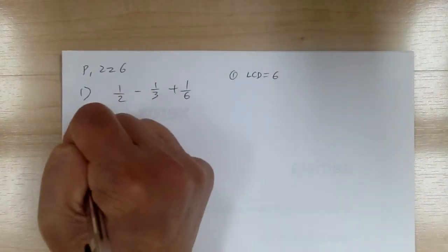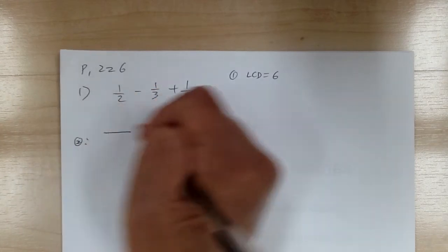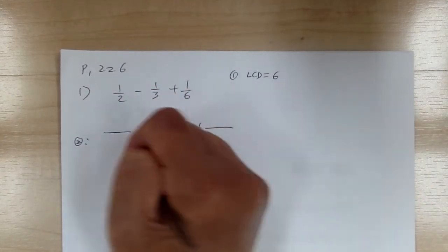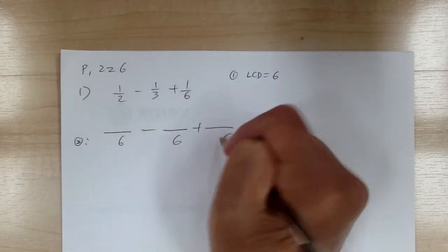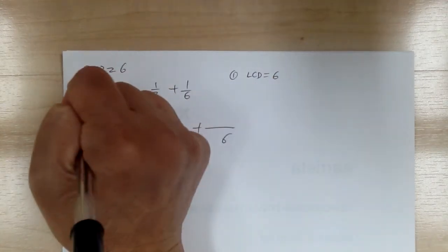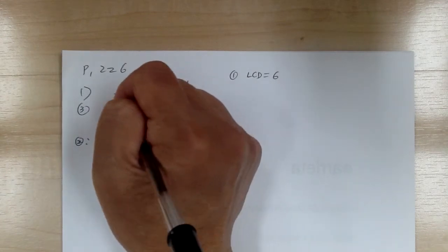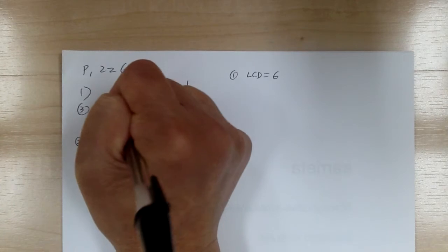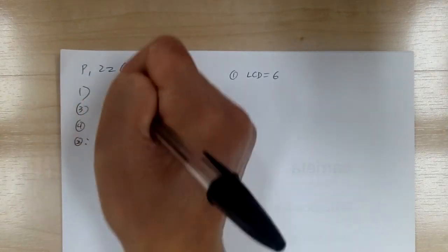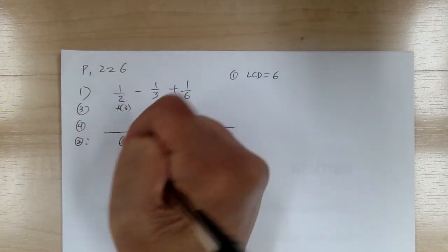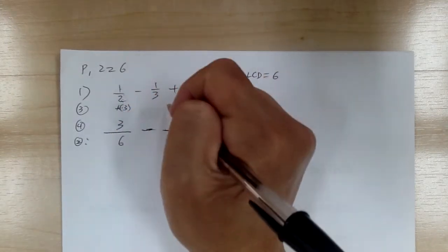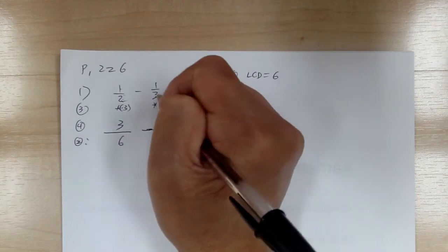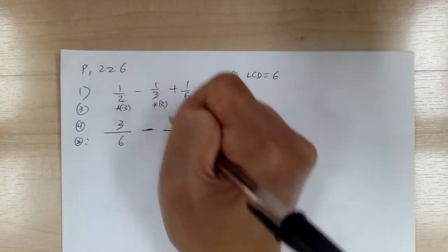Step two is get your common denominator. Step three, figure out what you need to multiply. From two to six, you need to multiply by three. Step four, go and multiply. Two times three gives you six, one times three gives you three. From three to six, you need to multiply by two. Three times two gives you six, one times two gives you two.